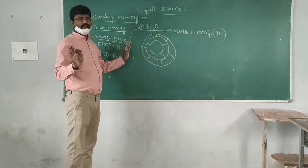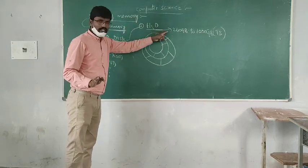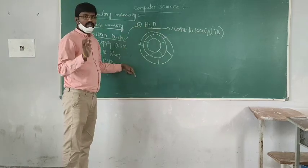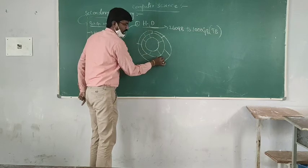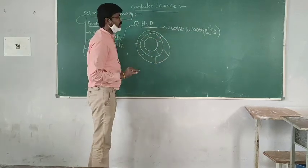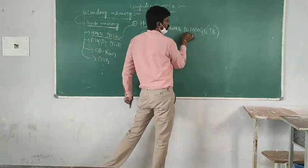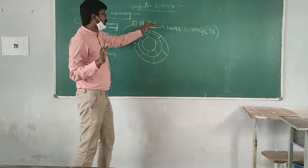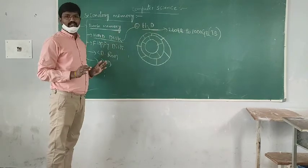This is hard disk. Hard disk is a secondary storage device used to store data permanently. Hard disk is made up of a number of surfaces; surface divided into number of tracks; tracks divided into number of sectors. Hard disk capacity is 260 GB to 1000 GB.